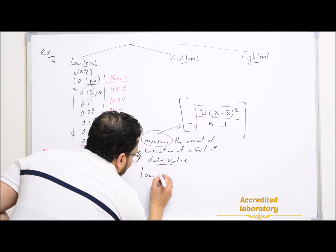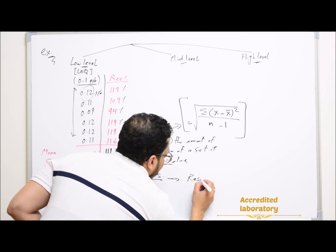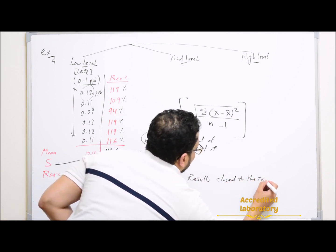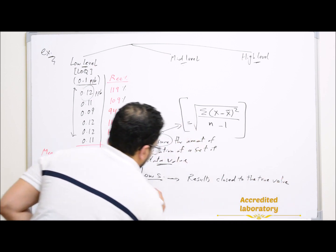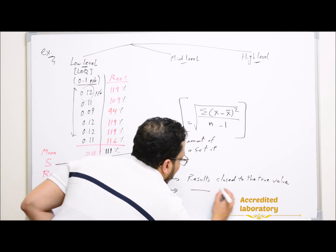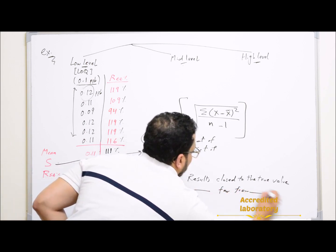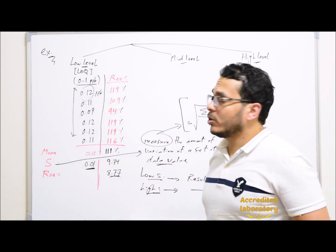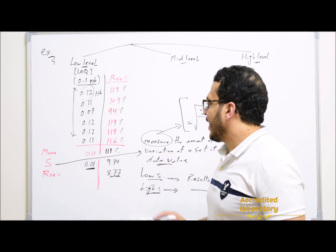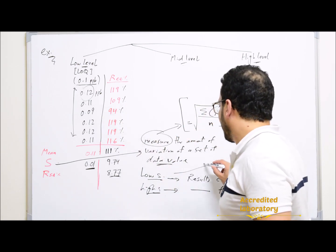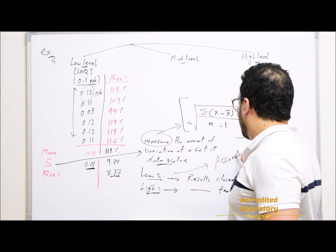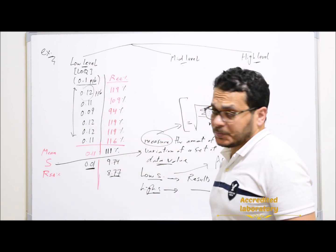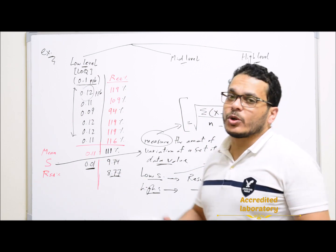Low standard deviation indicates that results are close to the true value. High standard deviation indicates that results are far from the true value. So if these individual results are close to the true value, standard deviation will be low and your results will be accurate. If your results are far from the true value, standard deviation will be high and your results will not be accurate.